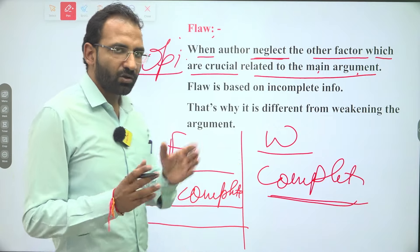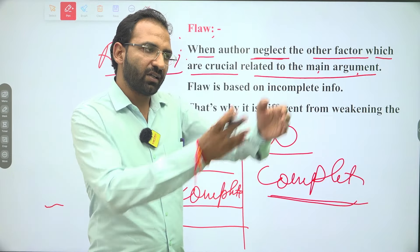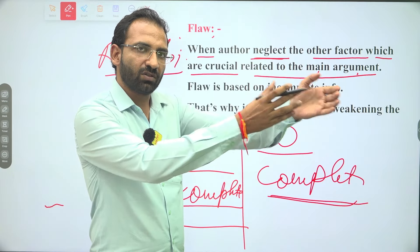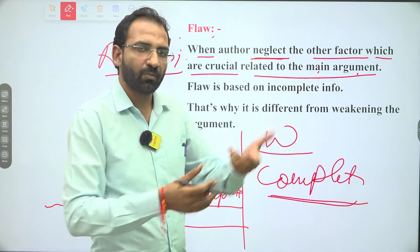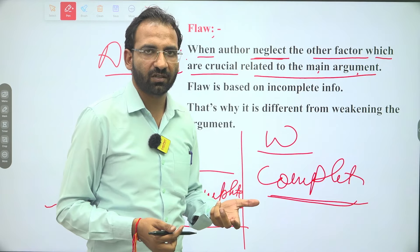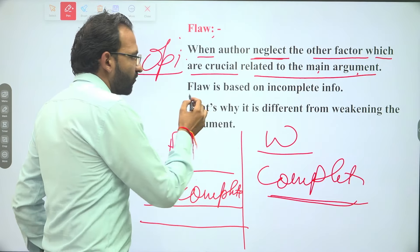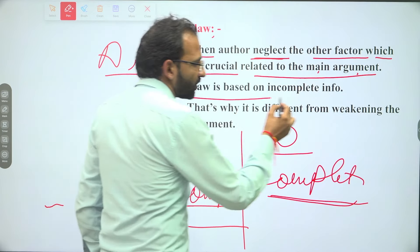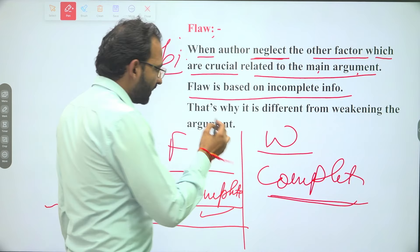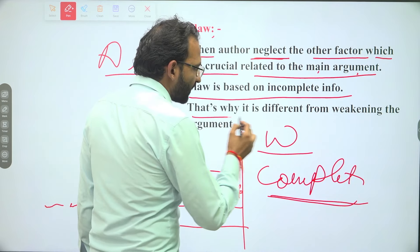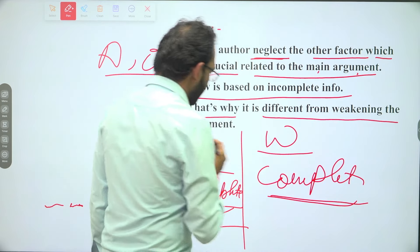When the author's argument has outweighed the other factors, then the author's opinion has a flaw. Flaw is based on incomplete information — and that's why it is different from weakening the argument.